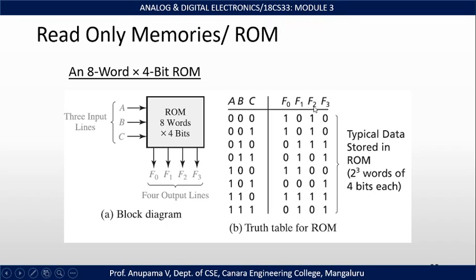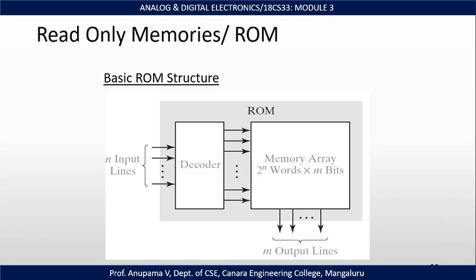This is the truth table for the 8-word × 4-bit ROM. The input varies from 0 to 7 and the outputs are representative — you can store any data within the ROM; the outputs shown are for representation purposes only. ROM is made up of a decoder and a memory array. The N input lines are decoded using an N-to-2^N decoder, and the memory array consists of 2^N words of M bits with M output lines.